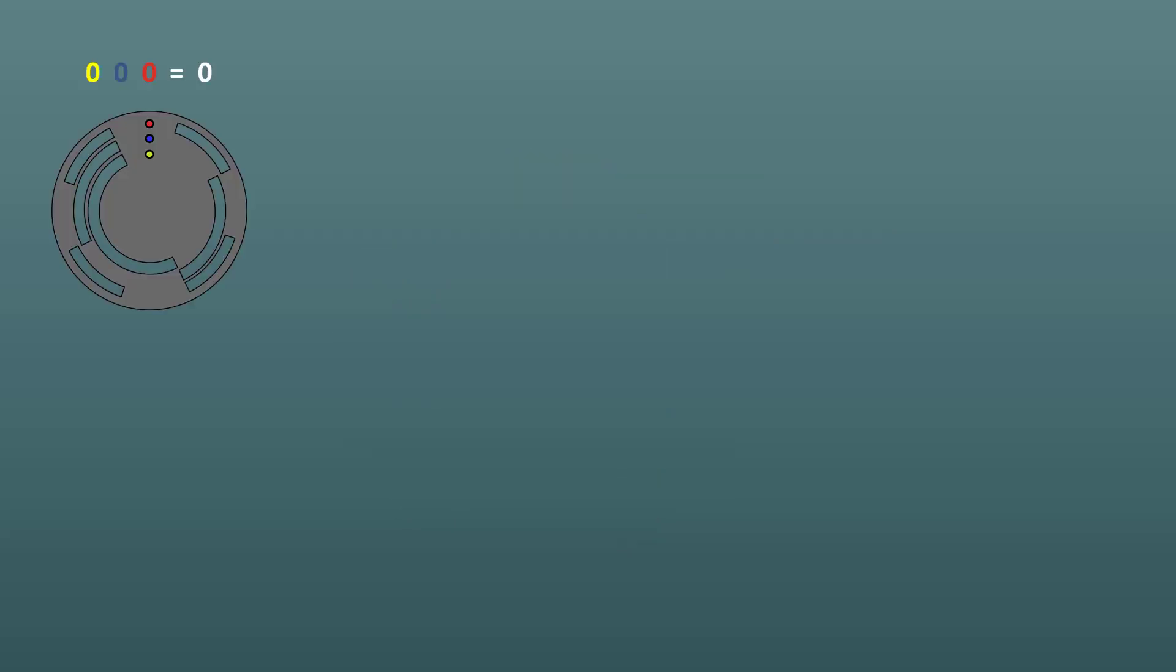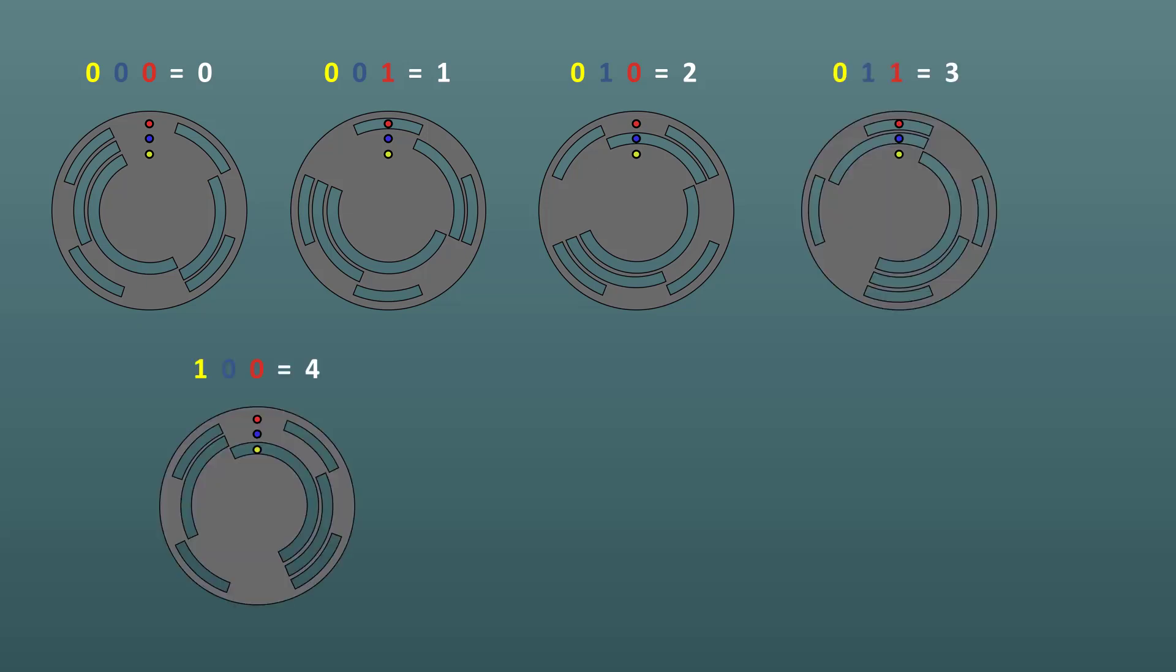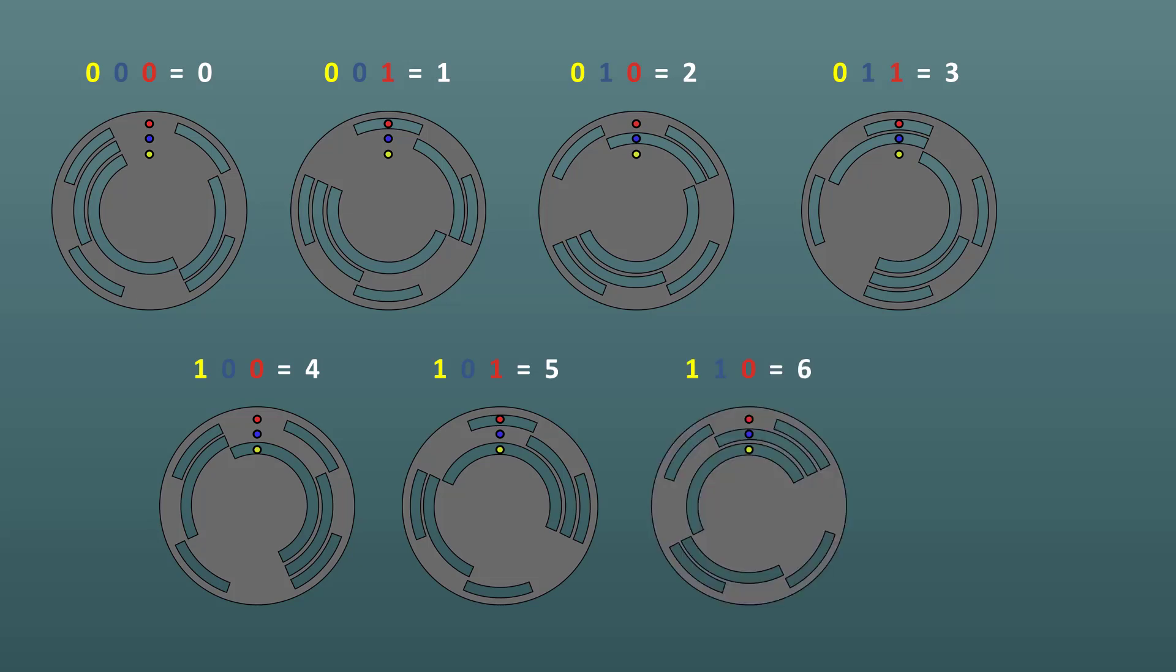Here's a simple absolute encoder that can tell you the position of the shaft to within 45 degrees. Not very useful in practice, of course. The grating pattern produces eight unique LED patterns. This is actually a binary pattern based on the shaft position. This slide shows the LED pattern for all eight possible locations.